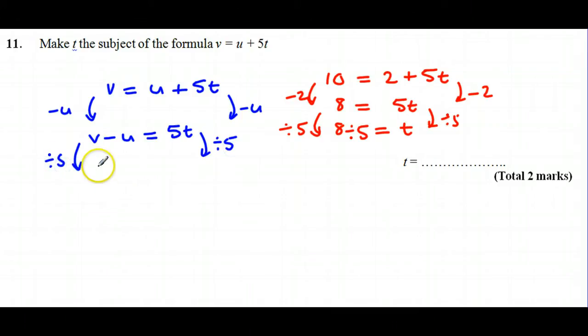In this case I've still got V minus U, and the easiest way to write divide by 5 is as a fraction over 5. Because I've divided by 5, I'm just left with T, which means V minus U all over 5 is the rearranged formula.